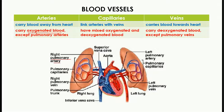Always remember: blood which is oxygenated will always be red in color, while blood which lacks oxygen — deoxygenated blood — will always be blue in color. So the pulmonary artery carries deoxygenated blood, but all other arteries carry oxygenated blood.